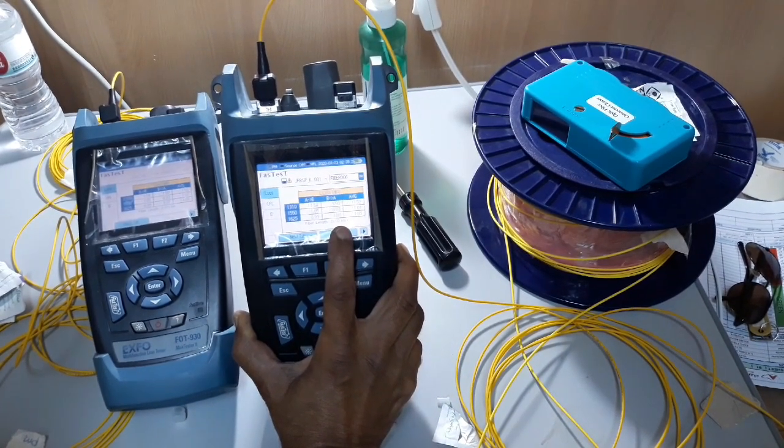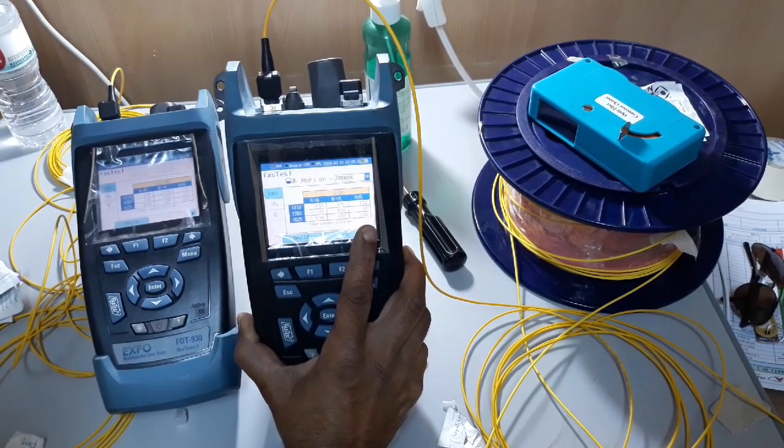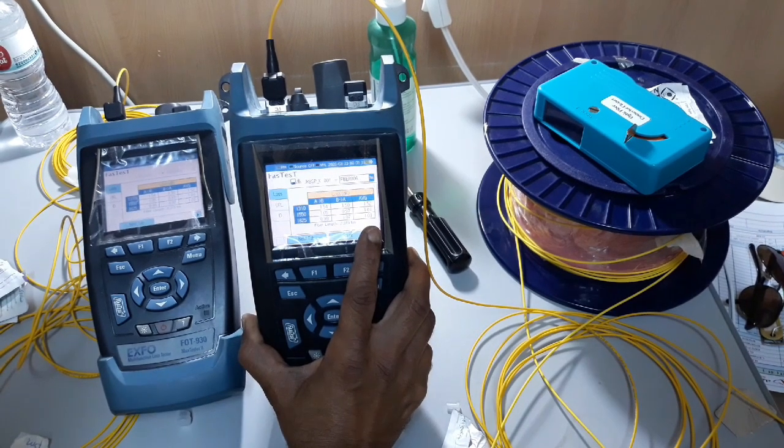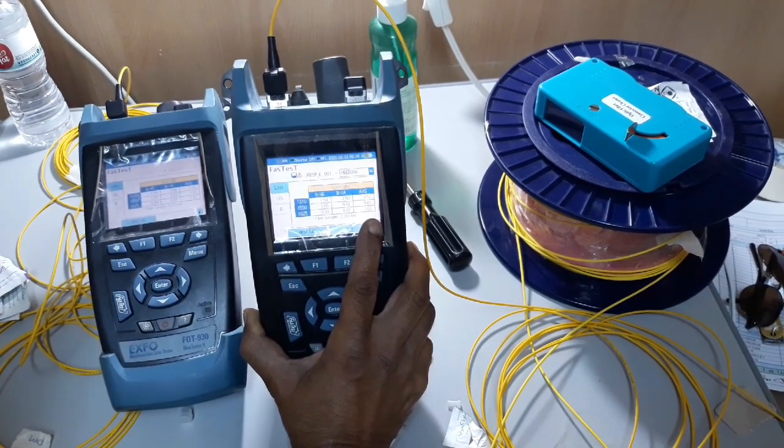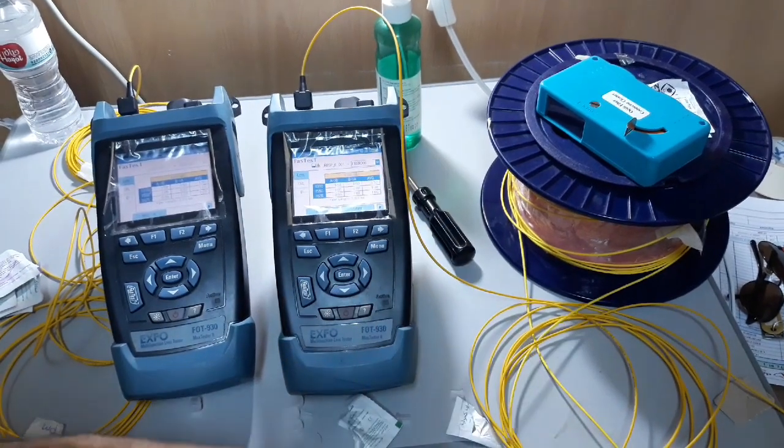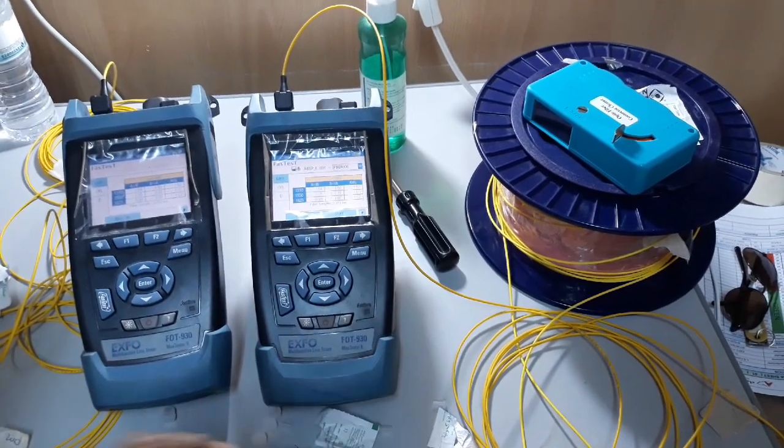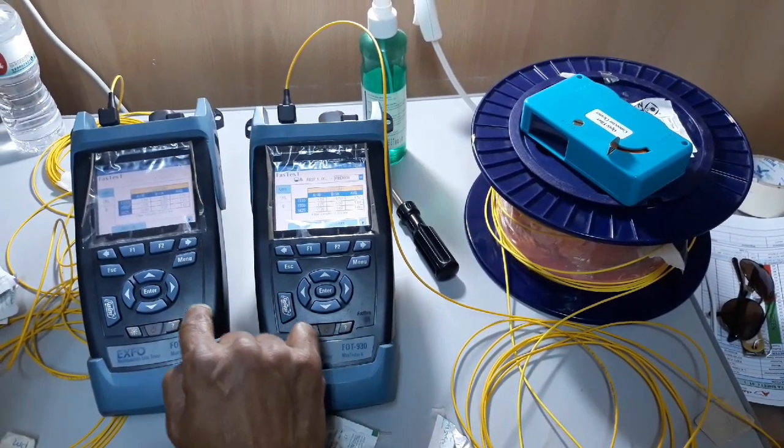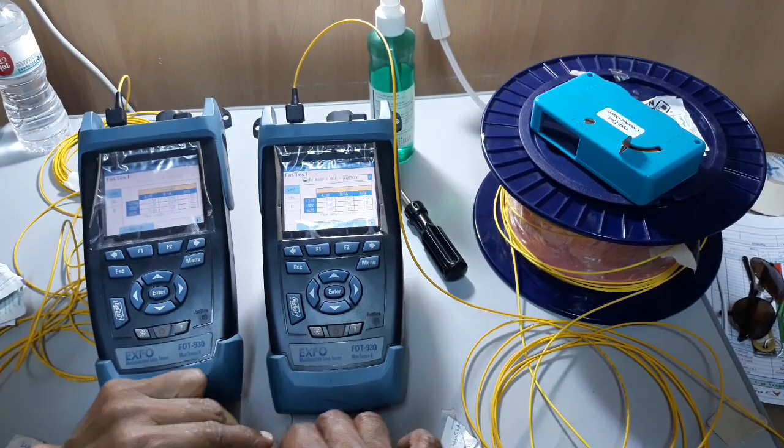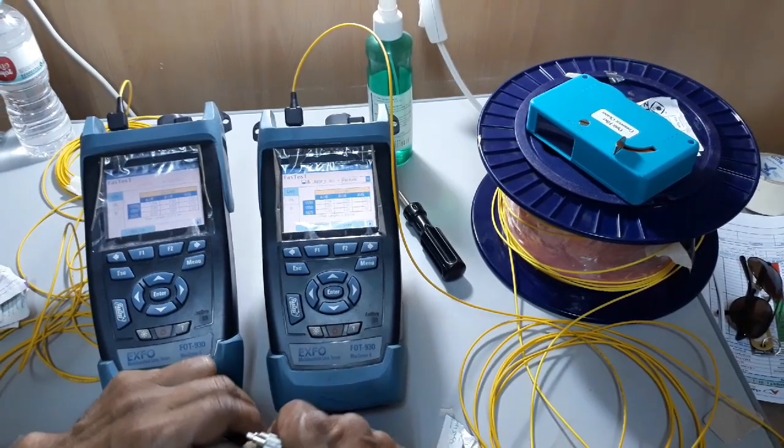Here our budget is: at 1550, 2.4 kilometer times 0.25 dB attenuation per kilometer plus 1 dB bulkhead, it comes as 1.6 dB. At 1310 it is coming as 1.8 dB. At 1625 it will be 1.65 dB.